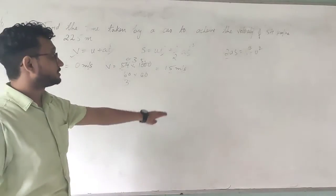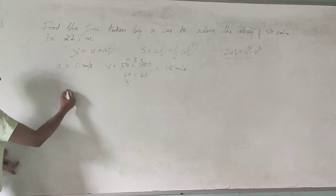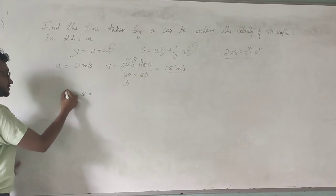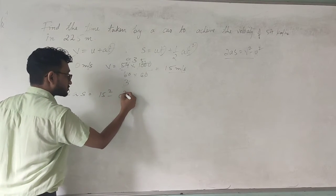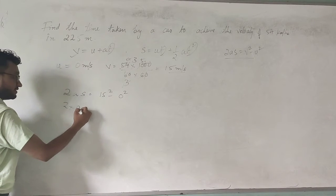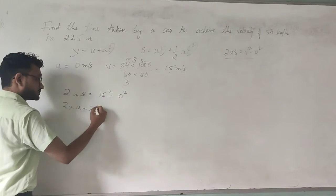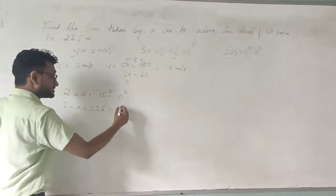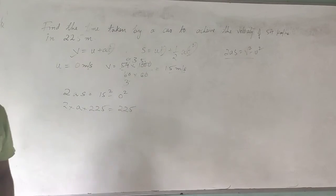After this thing all you need to do is apply the distance and the final velocity in the third equation. So we apply the equation that is 2as is equal to v square minus u square, that is 15 square minus 0 square. Distance has been given as 25 meters, so 2a into 25 is 225 minus 0.